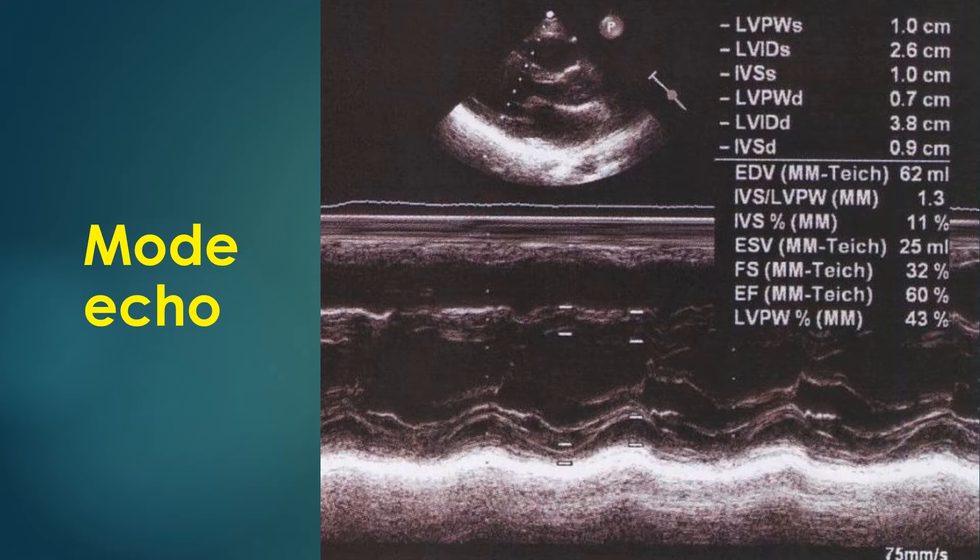EF ejection fraction. Ejection fraction by M-mode echo, though often used, has a lot of limitations being a one-dimensional measurement. 2D and 3D methods to calculate ejection fraction are better.